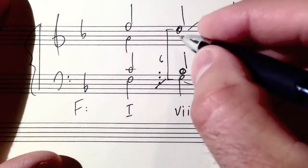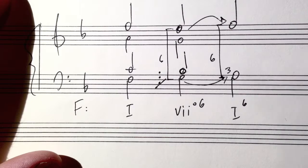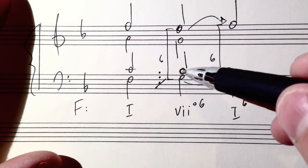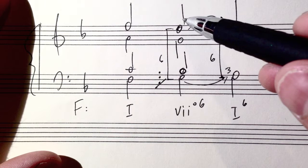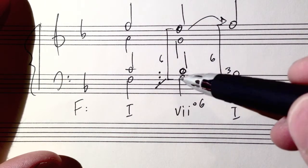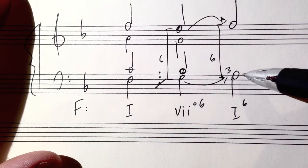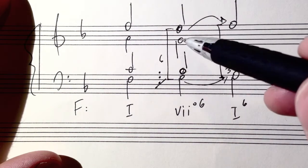So the best note to double is the third of the chord. So the third of this chord of the seven six chord would be the G natural. So you have G natural, B natural, G natural, E natural.